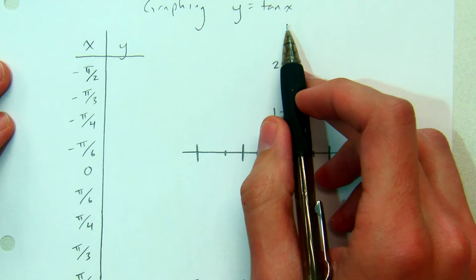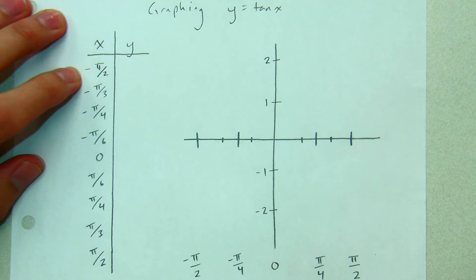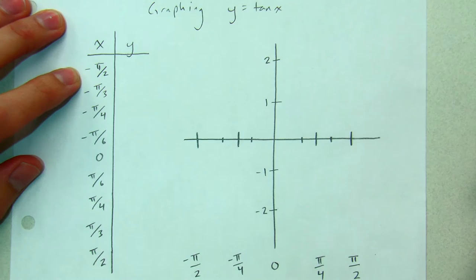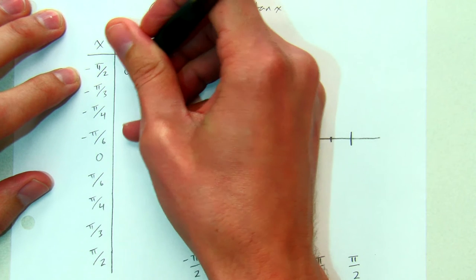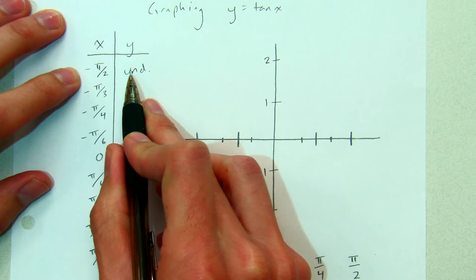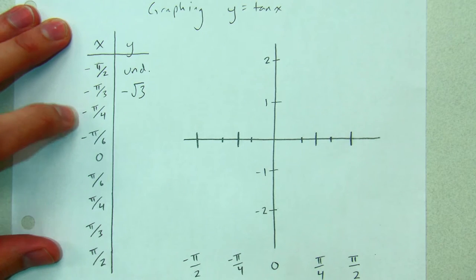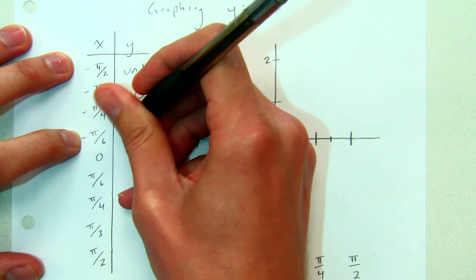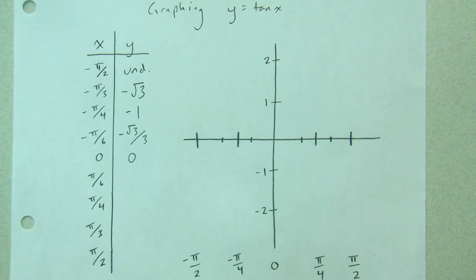If y equals tangent x, here are some different x values. I'm going to plug them into tangent and see what I get. I can use tangent as y over x to evaluate that. Tangent of negative pi over 2 is undefined, which is interesting — we didn't get that for any values in sine and cosine, and that'll make this graph look kind of different. Tangent of negative pi over 3 is negative root 3. Tangent of negative pi over 4 is negative 1. Negative pi over 6 is negative root 3 over 3. And tangent of 0 is 0. These are values we know from using our tangent of theta equals y over x formula and our special right triangles.